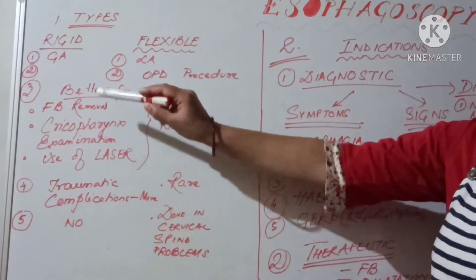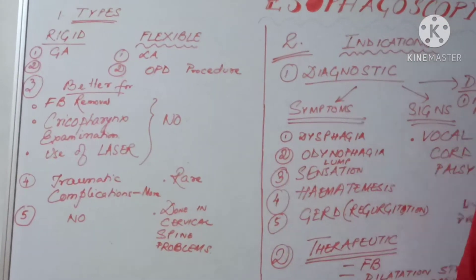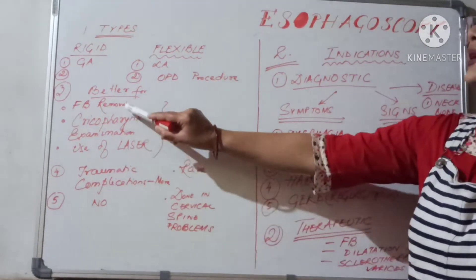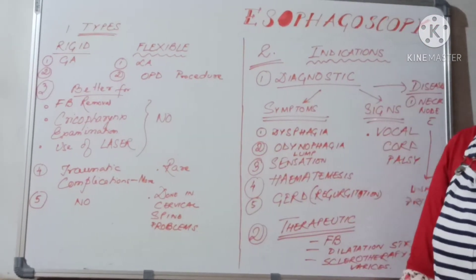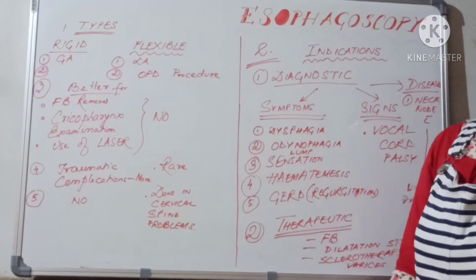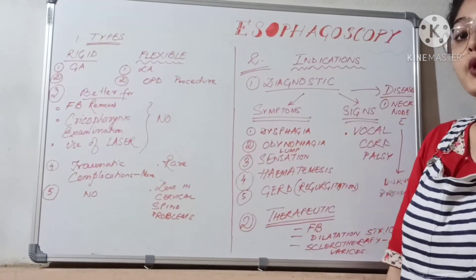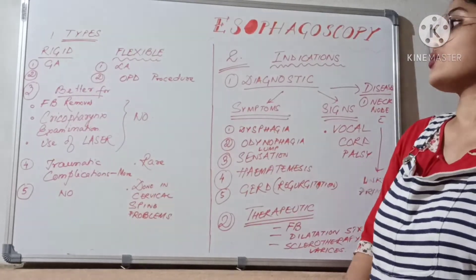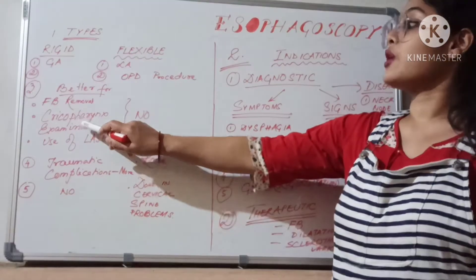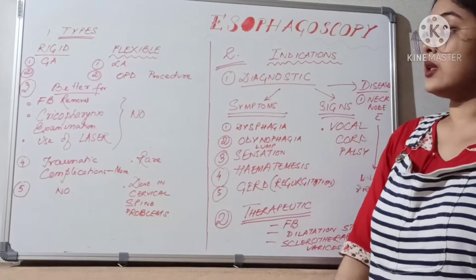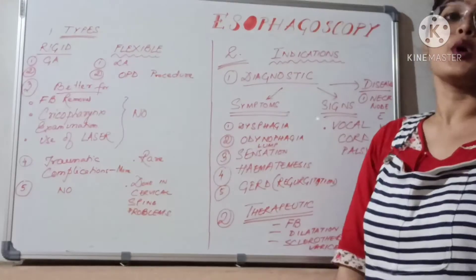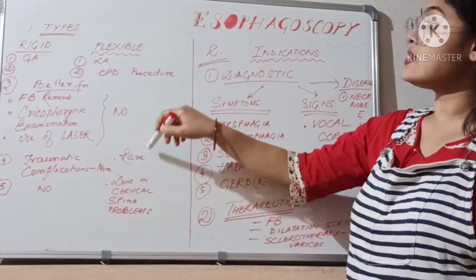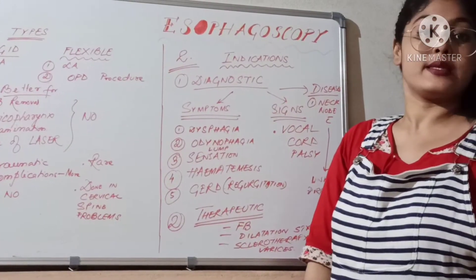Rigid esophagoscopy is preferred in which cases? Number one is foreign body removal — for example, if a meat bone is stuck in the esophagus, you use a rigid esophagoscope. The second is cricopharyngeal examination, and the third is when you want to use a laser. These things cannot be done with a flexible esophagoscope.